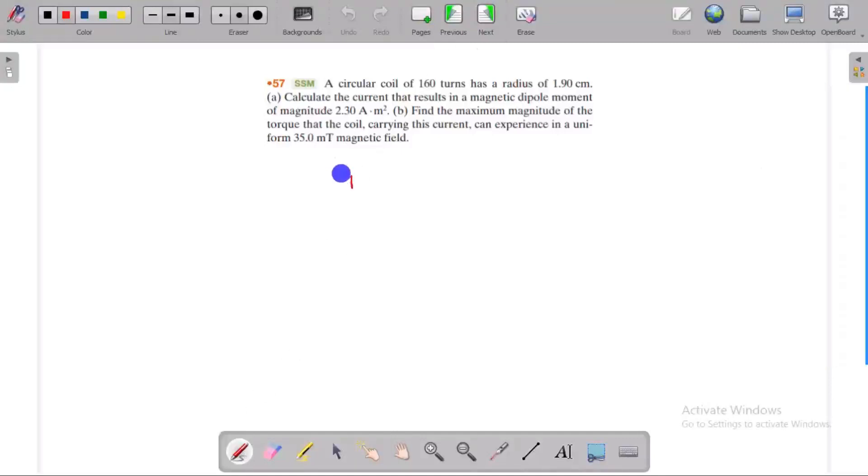A circular coil of 160 turns has a radius r equal to 1.90 centimeters. Calculate the current that results in a magnetic dipole moment of magnitude m equal to 2.0 ampere meter squared. The magnetic field is 35 millitesla, and we need to find the maximum torque.